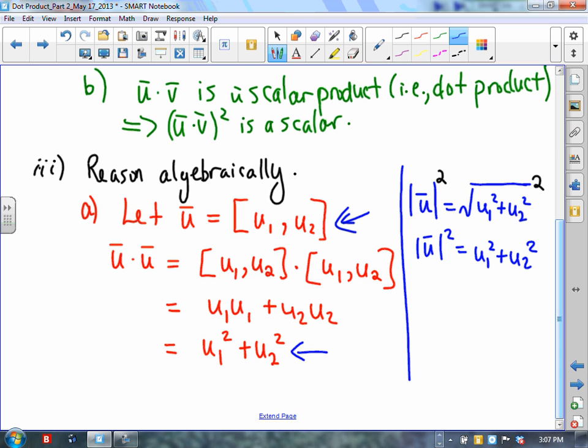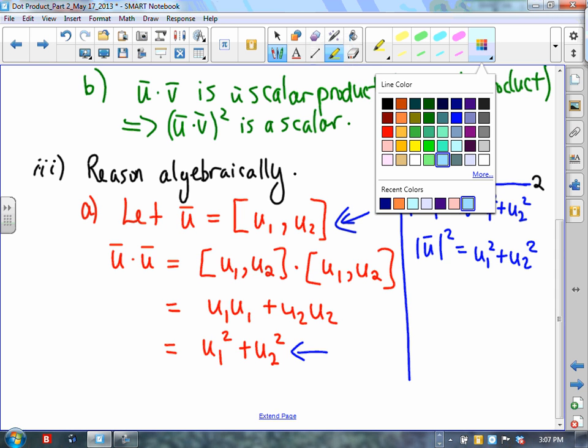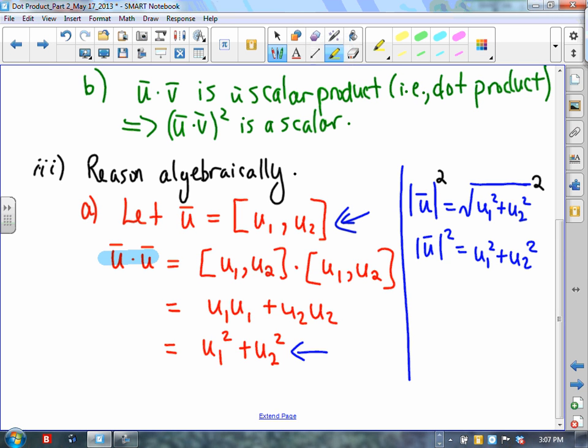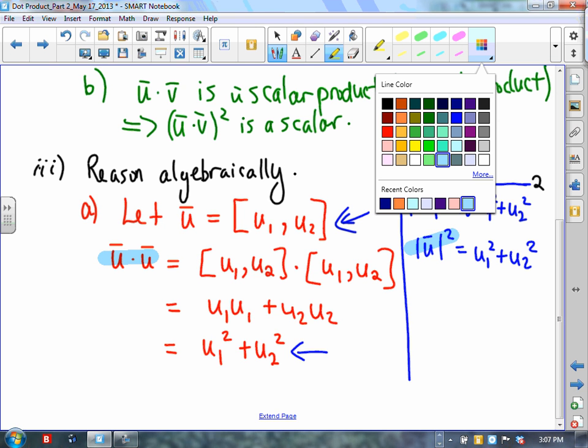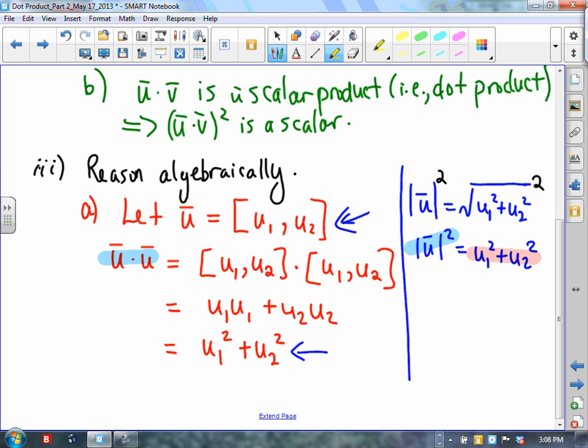So the expression does have meaning. The interesting thing is that we have just actually proven something else. We have just shown that u dot u is the magnitude of u squared using Cartesian vectors. The reason being is that the expressions they both produce equivalent right-hand sides. That wasn't the goal of this problem, but it just happened to be something that you can use in your own work.